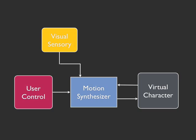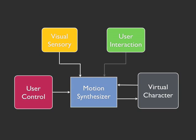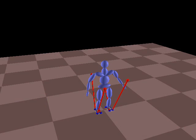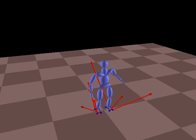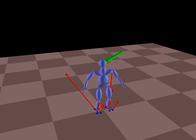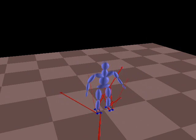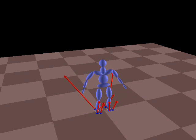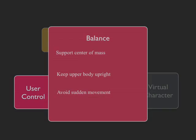The user can interact with the virtual character by applying external forces or kinematic constraints in an interactive fashion. Here we demonstrate a simple balance control strategy that consists of three objectives: support center of mass, keep upper body upright, and avoid sudden movement. The motion synthesizer solves for joint configurations and contact forces shown as red arrows, while the user applies forces shown as green arrows. With only these three simple control strategies, the character is able to maintain balance and withstand small disturbances.